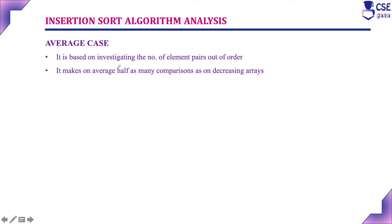Considering the average case efficiency, the number of comparisons lies between the best case efficiency and worst case efficiency. It is based on the investigation of the number of element pairs out of order. Not like worst case efficiency where every comparison requires an exchange — it depends on the number of element pairs out of order. It makes on average half as many comparisons as on a decreasing array. For example, if the worst case executes the basic operation 10 times, the average case executes it 5 times.